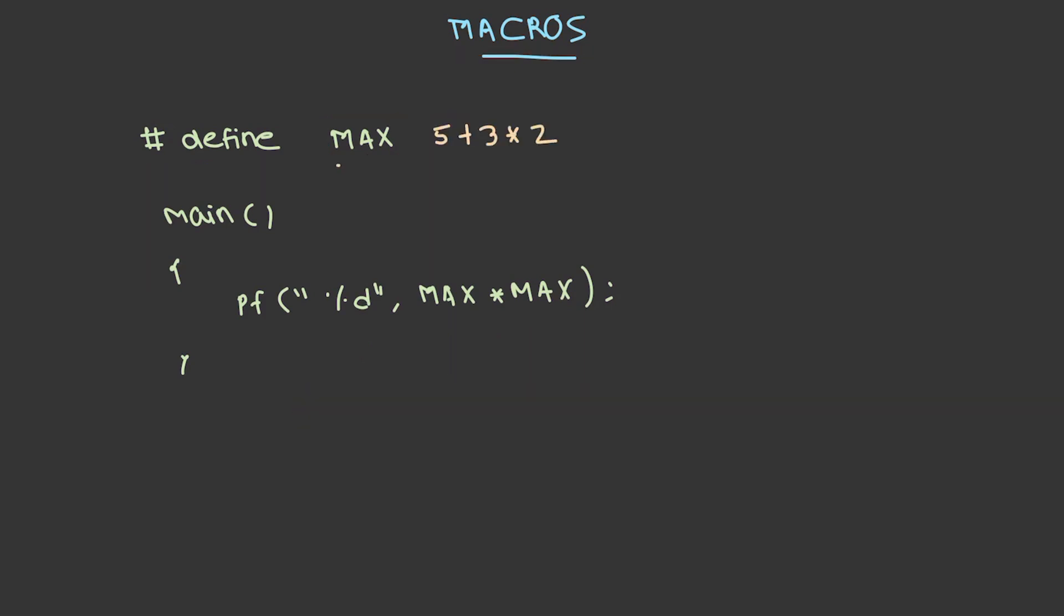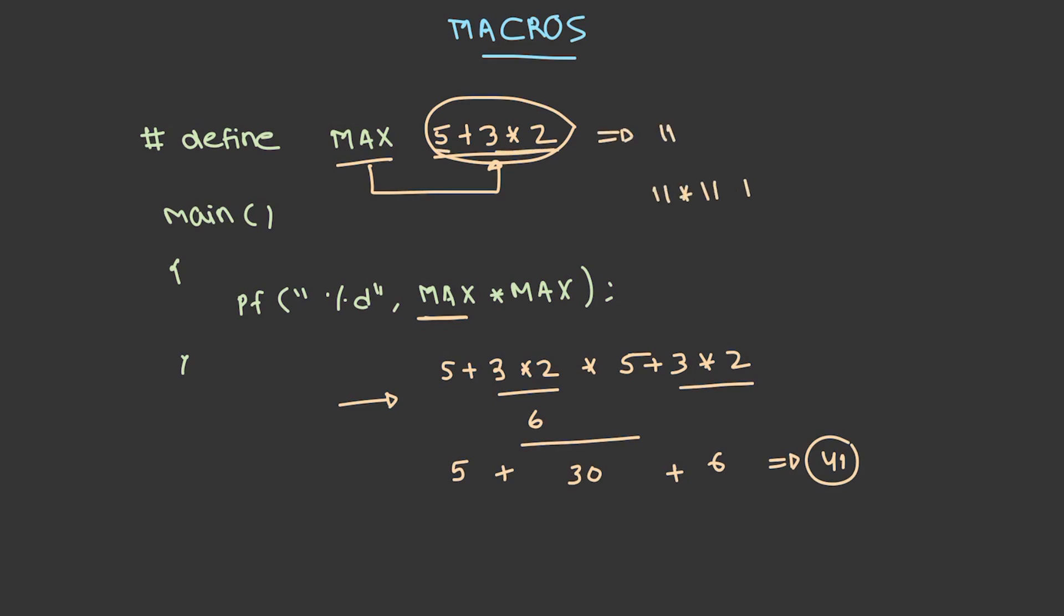Let's take another case. Now the value of MAX has to be substituted with this expression. Don't try to compute the value and then substitute. What you have to do is you have to take the entire expression and substitute in the equation. According to the order of precedence and associativity, first 3 times 2, 6 followed by 6 into 5, 30 and then 3 times 2, 6. Here we have a 5 left out, which will be 41. But if you compute the value initially, 3 times 2, 6 plus 5, 11. 11 times 11 is 121. But the correct answer in this case would be 41. So you take the same expression, substitute it inside the program and then finally find the result.